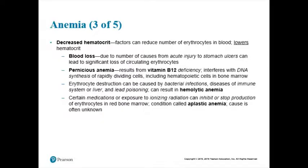Know anemia in general — it's a decreased oxygen-carrying capacity. Know the three major causes: decreased hemoglobin, decreased red blood cell numbers (hematocrit), and abnormal hemoglobin. Know the different types: iron deficiency anemia (not enough iron, so not enough hemoglobin), anemia of chronic disease (something interfering with iron transportation), pernicious anemia (lack of vitamin B12), hemolytic anemia (destroying red blood cells), aplastic anemia (not even making them), and sickle cell anemia (abnormal hemoglobin from a dysfunctional gene causing cells to sickle). That's red blood cells. Now we move to white blood cells and platelets.